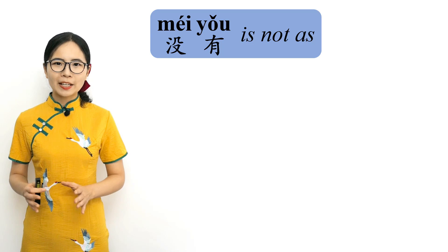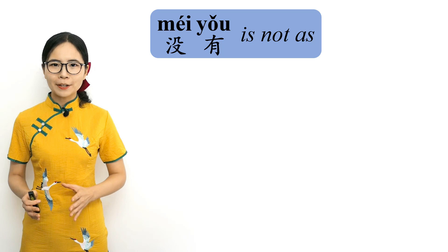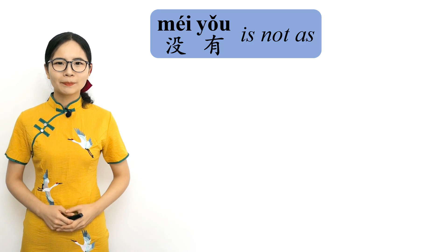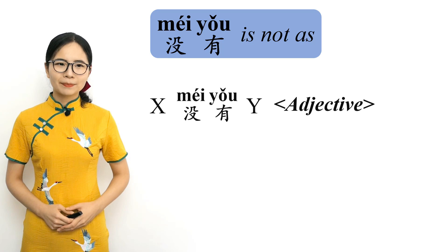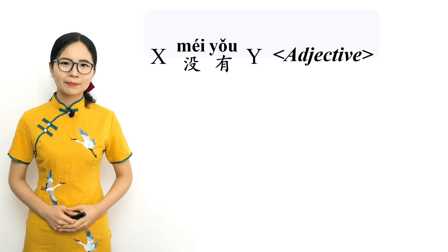The second way of doing negative comparisons uses 没有 to say that a person or thing is not as tall, smart, beautiful, or expensive as another. You may have learned that 没有 means 'don't have,' but in comparison it has the meaning 'is not as.' Please repeat after me. 没有 — is not as. Here's the structure: X 没有 Y adjective, which means 'X is not as adjective as Y.' Let's look at some examples.